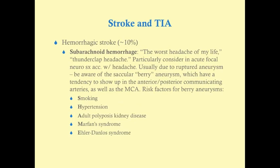Hemorrhagic strokes are most commonly subarachnoid hemorrhages, and most of those come from aneurysms — though trauma can also cause them and that will usually be in the history. Subarachnoid hemorrhages present classically with a severe headache — patients often say it's the worst headache of their life. It's also called a thunderclap headache because it happens so suddenly. You should particularly consider this when acute focal neurologic symptoms are accompanied by a severe headache.